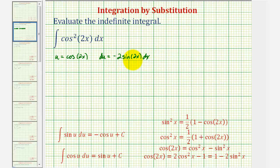So notice how the integrand does not contain a factor of sine 2x, and therefore this u substitution will not work.